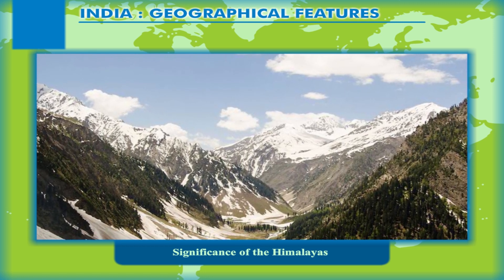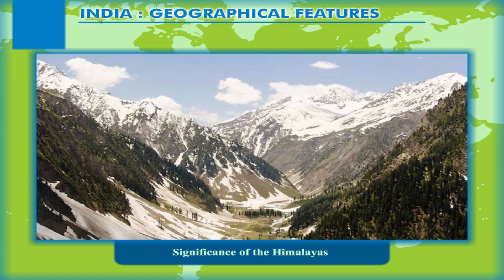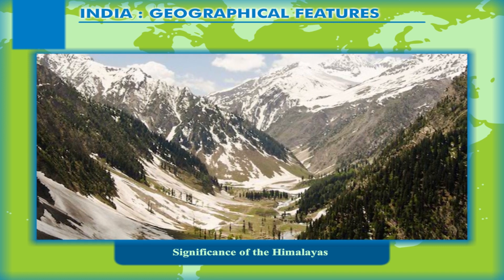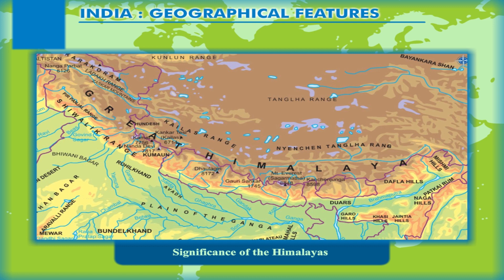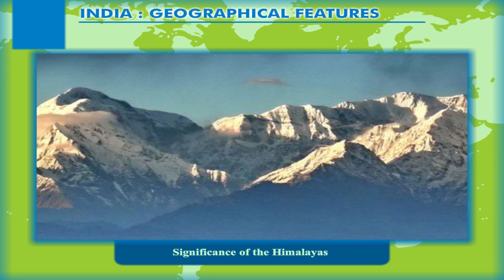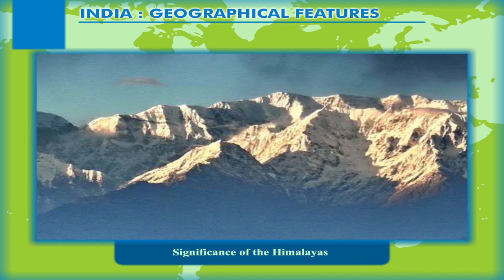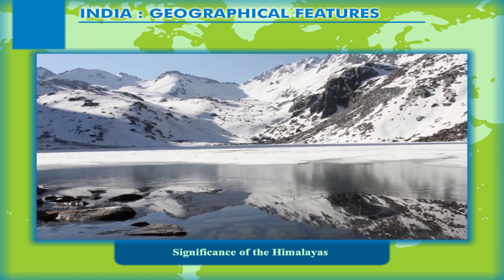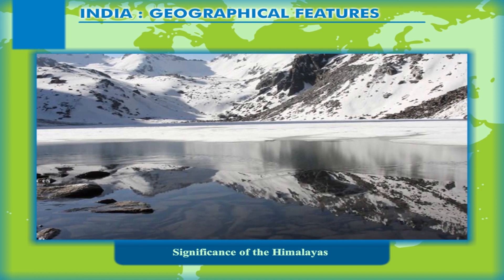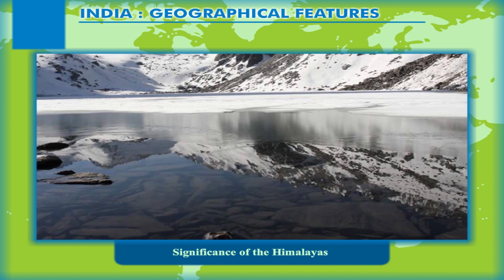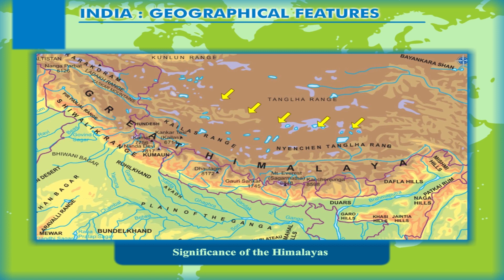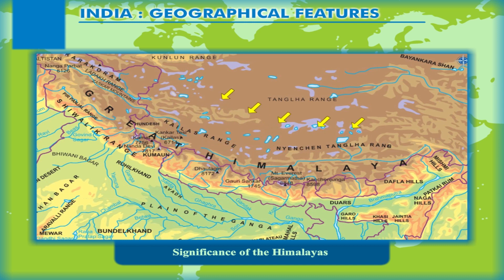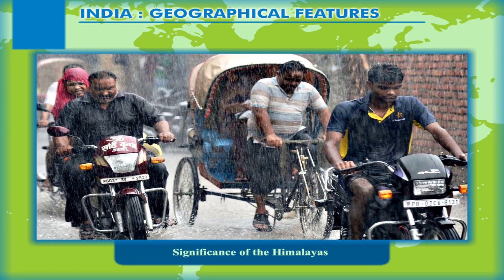The Himalayas have played a dominating role in deciding the geography of the Indian subcontinent and more importantly, the life of the people of India. Although the importance of the Himalayas as a barrier for invaders has declined in recent times, they still form a natural boundary between India and most of Asia and play a significant role as a cultural barrier. The massive snow fields and glaciers are the source of several North Indian rivers, contributing greatly to the formation of the fertile northern plains. The Himalayas also prevent cold winds from northern Asia from entering India and block the path of moisture-laden monsoon winds, helping cause rainfall in India.